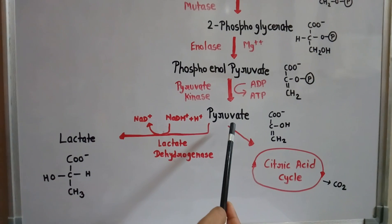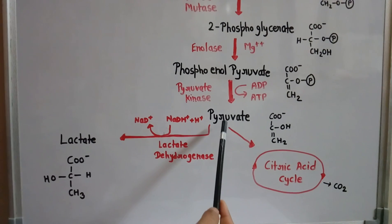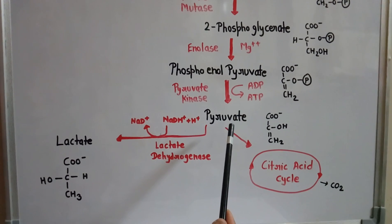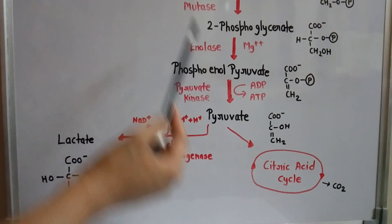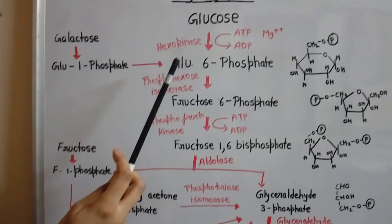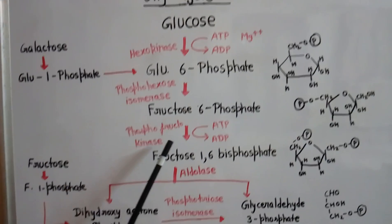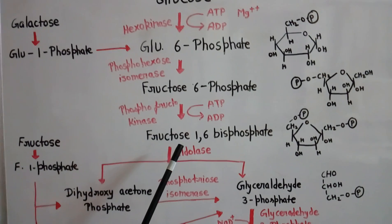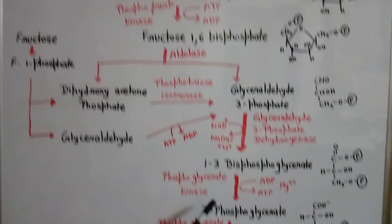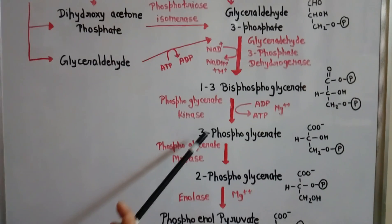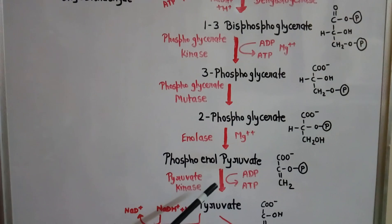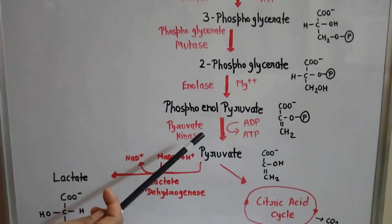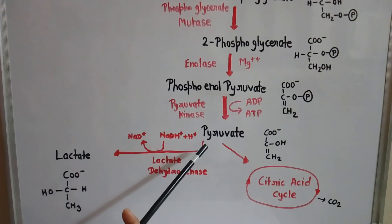In the whole process of glycolysis, one glucose molecule is converted to two molecules of pyruvate. Regarding ATP: consumption occurs in the first and third steps — one ATP each — totaling two ATP consumed. Production occurs in two later steps, two ATP each, totaling four ATP produced. Therefore, the complete glycolysis process results in a net gain of two ATP molecules.